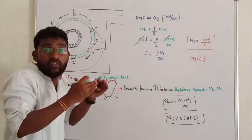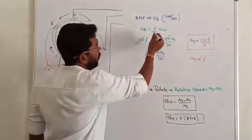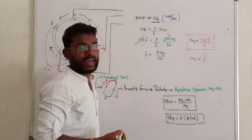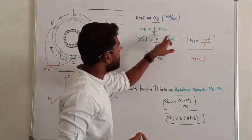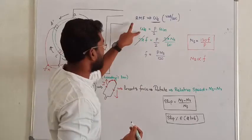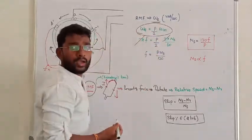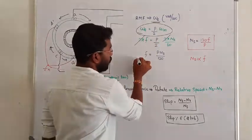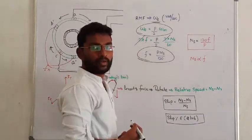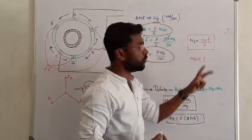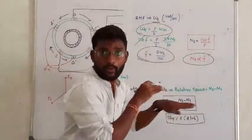The rotating magnetic field runs at the synchronous speed of the machine. In electrical terms, we define it as omega-e, in electrical radians per second. In mechanical terms, the speed can be written as 2π·ns/60. We also know the relation: frequency f = ns·p/120, or synchronous speed ns = 120f/p. This clearly indicates that synchronous field and frequency are directly proportional.